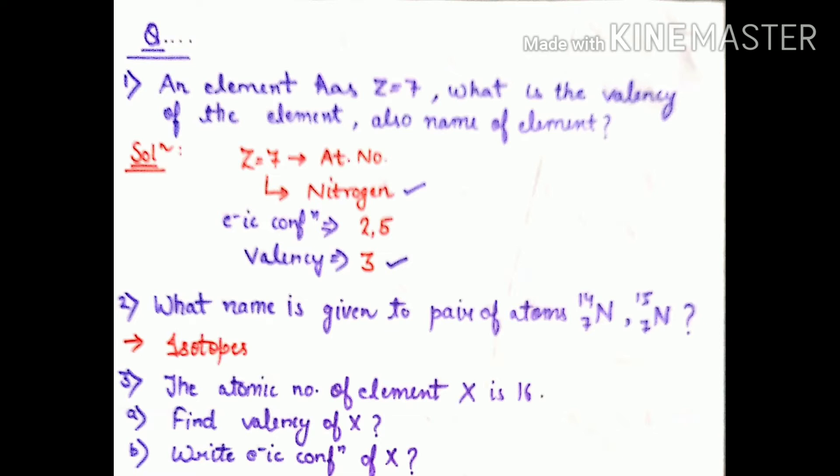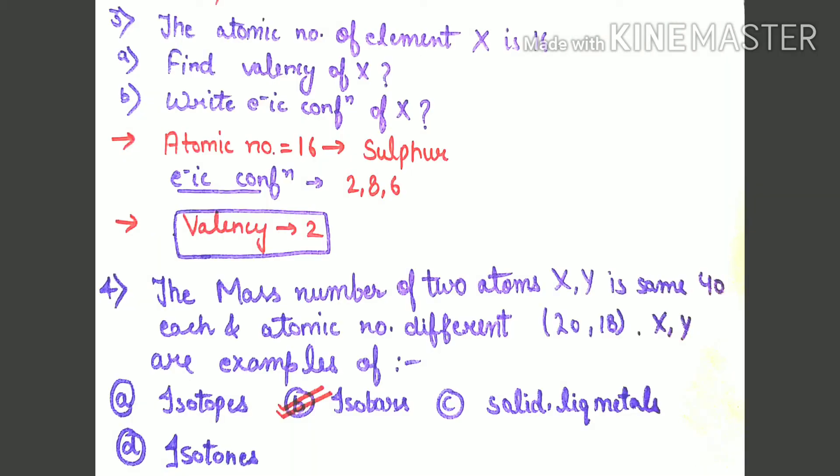Its outer shell has six electrons. To fulfill its octet it requires two electrons, so the valency of this particular element will be 2. Atomic number 16 means element is sulfur, electronic configuration 2,8,6, so valency will be 2.